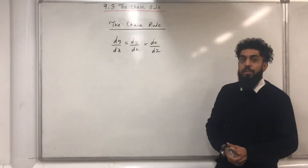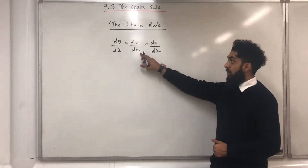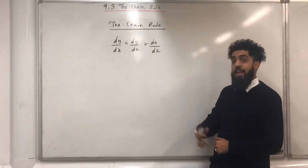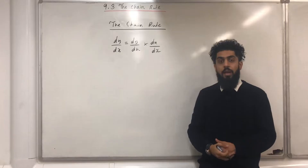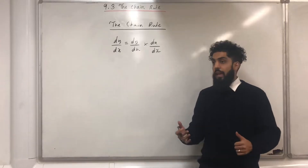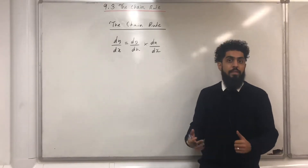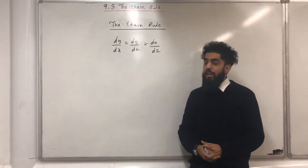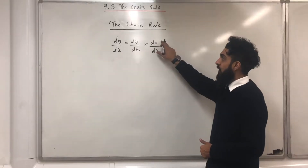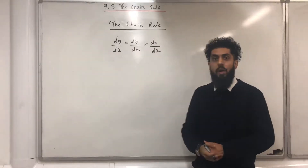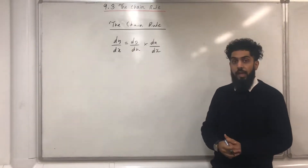I could use any other variable instead of u — I could use t, I could use s, I could use theta — but in this case I'm just going to stick to u. So that there is the chain rule.